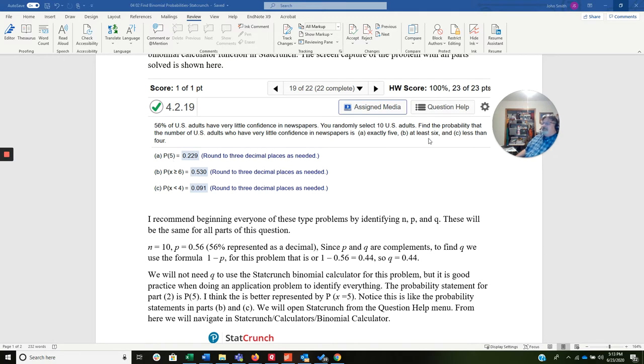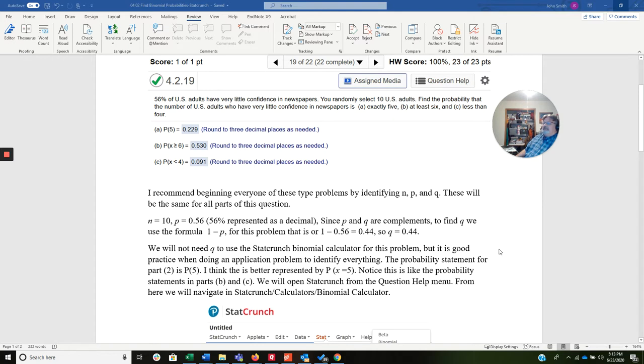I always recommend people start these problems by identifying N, P, and Q. These will be the same for all parts of this question. So N equals 10. We got that from you randomly select 10 U.S. adults. P equals 0.56, which comes from the 56 percent of U.S. adults who have very little confidence in newspapers.